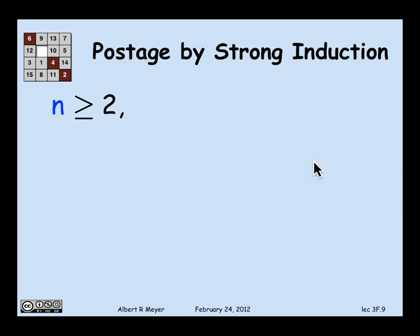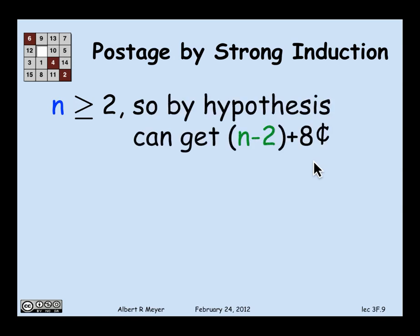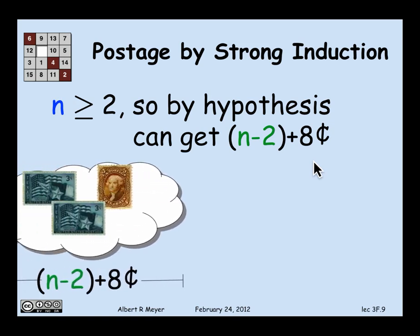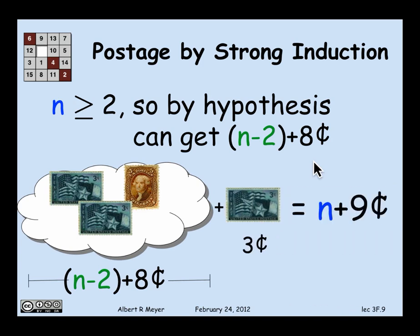Well, the nice thing about n being greater than or equal to 2 is that if I subtract 2 from it, it's a smaller number, and it's still non-negative. And that means that I can get that amount plus 8 cents. So I'm in this nice situation where I, by strong induction, I can get (n-2)+8 cents. There they are. And how do I get to n+9? Well, it's easy. You add a 3 cent stamp, and you have n+9 cents, which completes the proof of the induction case, and the whole theorem is proved.